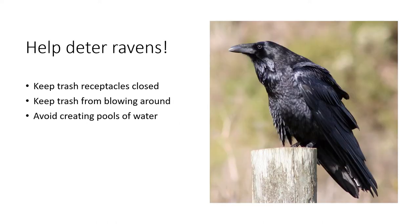Another thing we can do is help to deter ravens. One of the big reasons raven numbers have grown around houses and in town is because of trash — they love to get food from us. Just keeping your trash receptacles closed and keeping trash from blowing around helps. If you own a business in town and you have big dumpsters, keeping the dumpsters closed makes a big difference. Removing all of these resources we've created for ravens will hopefully help lower their numbers. Also avoid creating pools of water, as they love water and irrigation. Anything you can do to minimize that would be great.